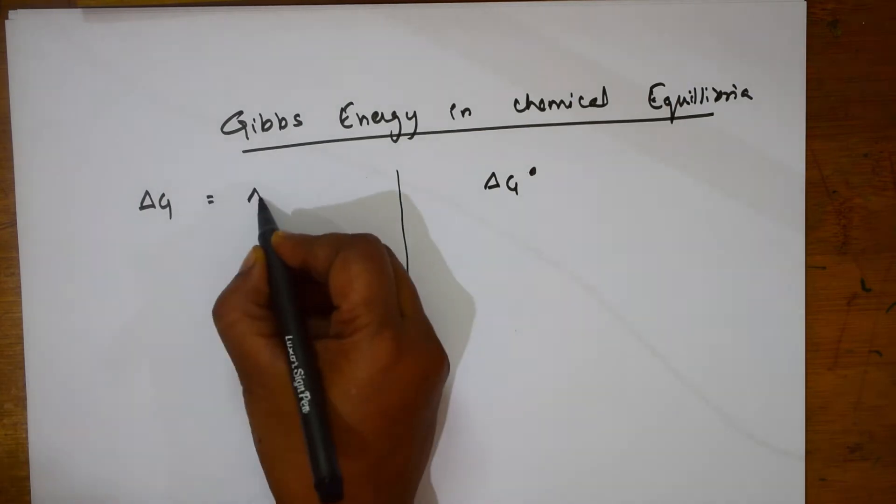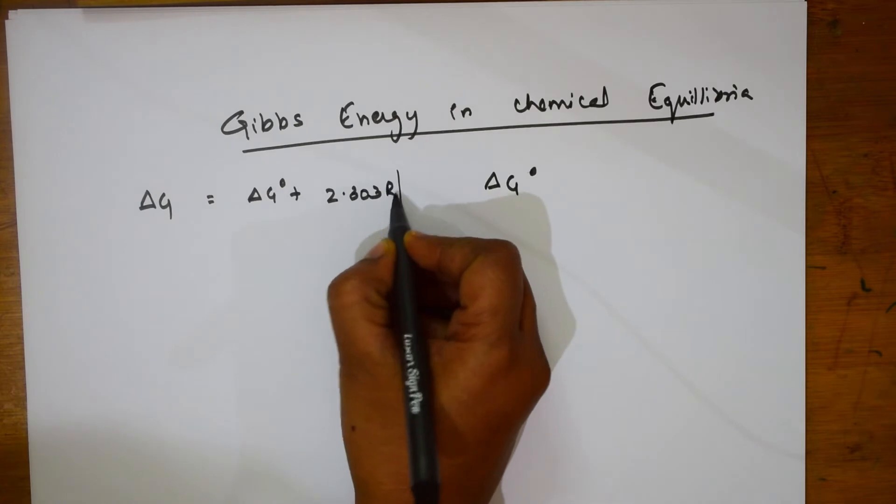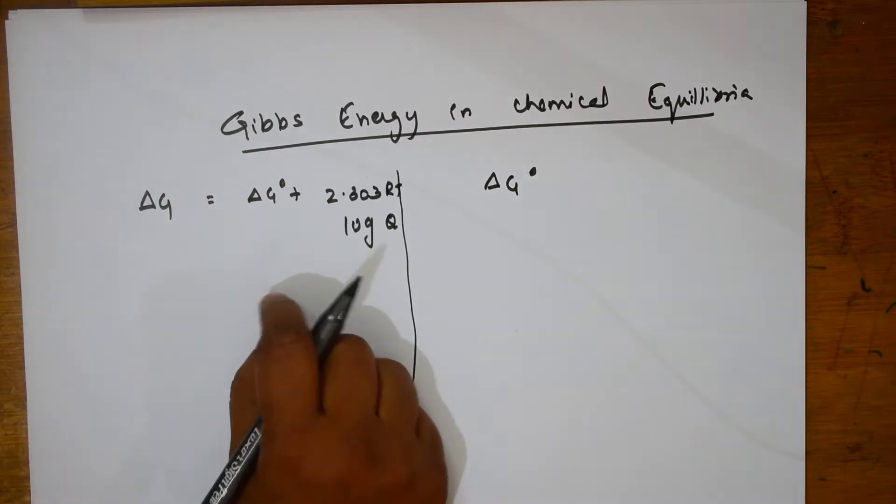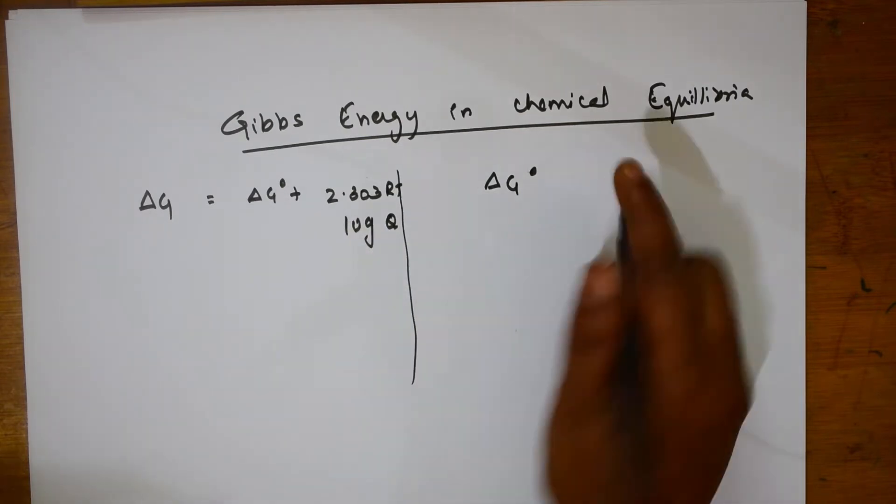The formula for this is Delta G equals Delta G naught plus 2.303 RT log Q. Now, when I have to speak about Delta G naught...